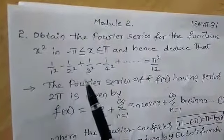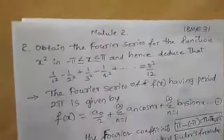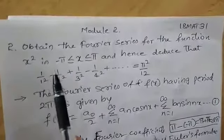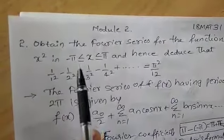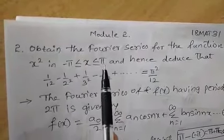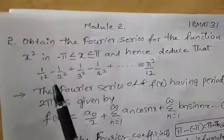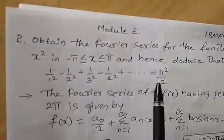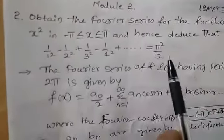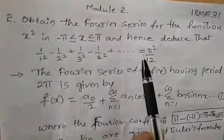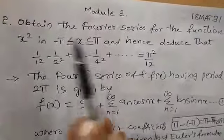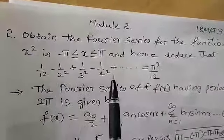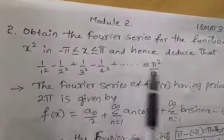Coming to the second problem of Module 2 for third semester Fourier series. The first question is: obtain the Fourier series for the function x² in minus π ≤ x ≤ π, and hence deduce that 1/1² − 1/2² + 1/3² − 1/4² + ... = π²/12. This same problem appeared in the last September 2020 exam.